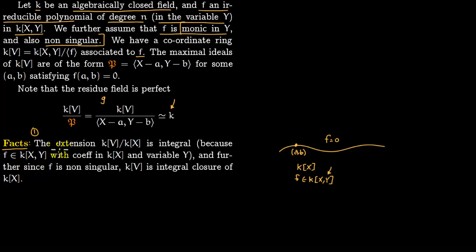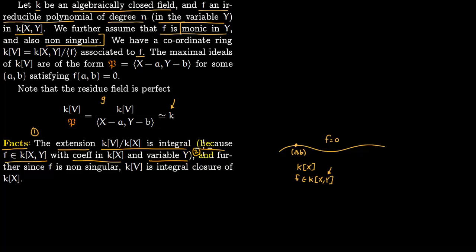The first fact is that the extension kV over k[x] is integral, precisely because f is a monic polynomial with coefficients in k[x] and variable y — every element of kV is integral over k[x] by definition. The second fact, discussed in the lectures on normalization, is that if f is non-singular then kV is actually the integral closure of k[x], not just an integral extension.